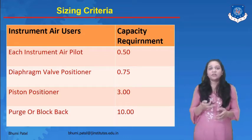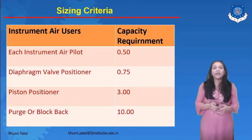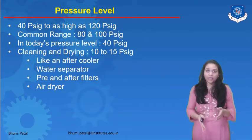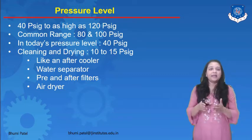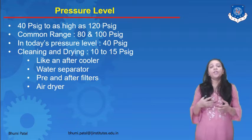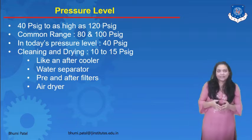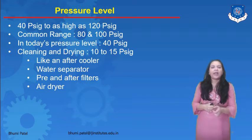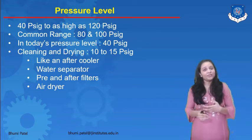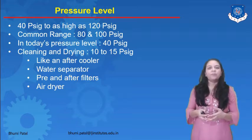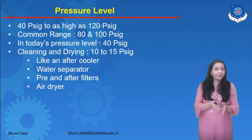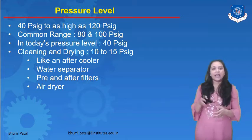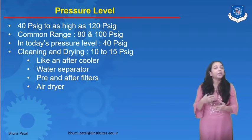In our syllabus, we have studied four types of instrument air users. The next factor is the pressure level. The pressure level range for a particular instrument is 40 PSIG to as high as 120 PSIG. The common range of the pressure level is 80 to 100 PSIG. In today's instrument systems, we generally use a 40 PSIG pressure level.